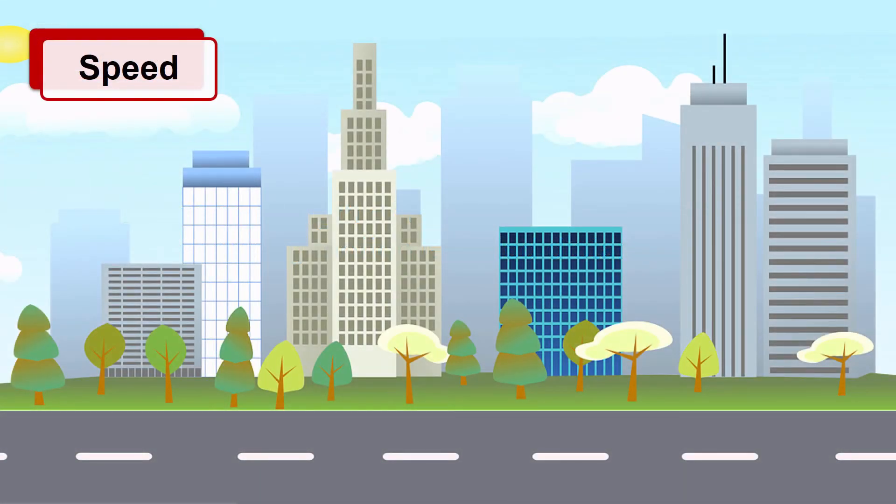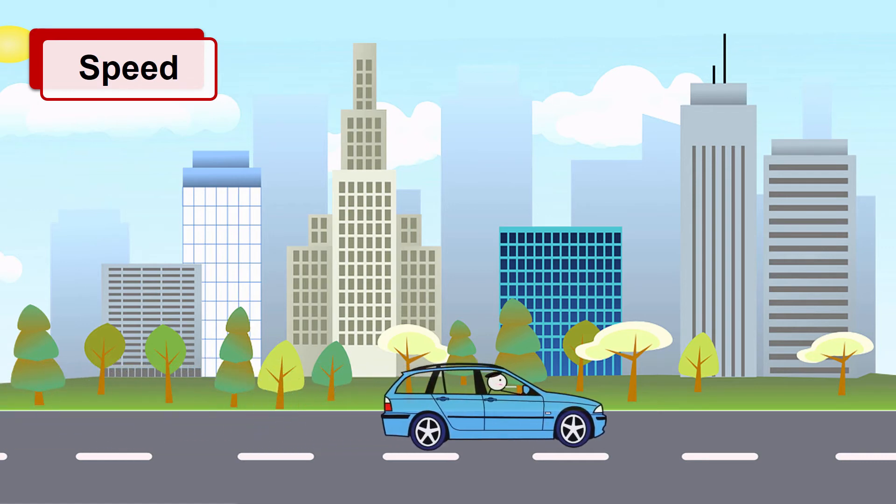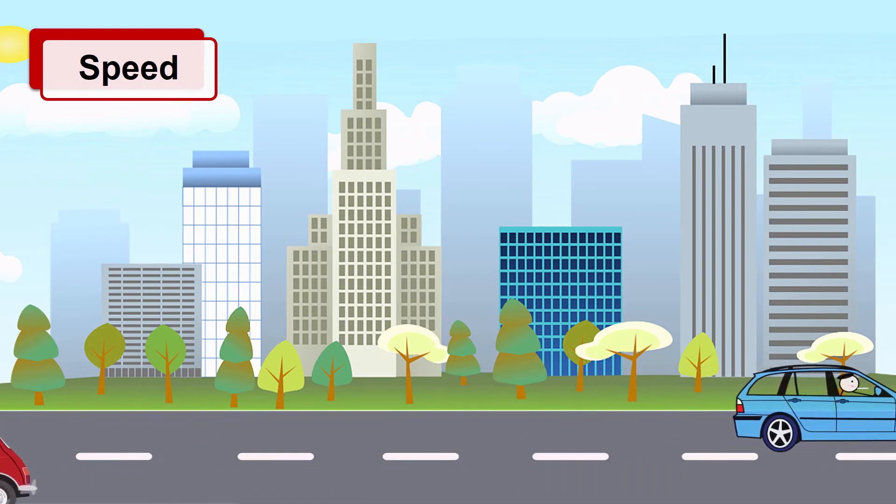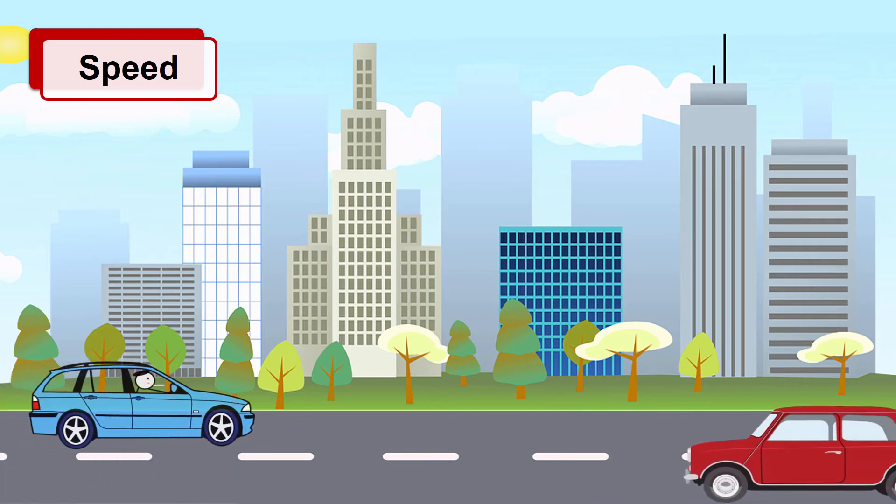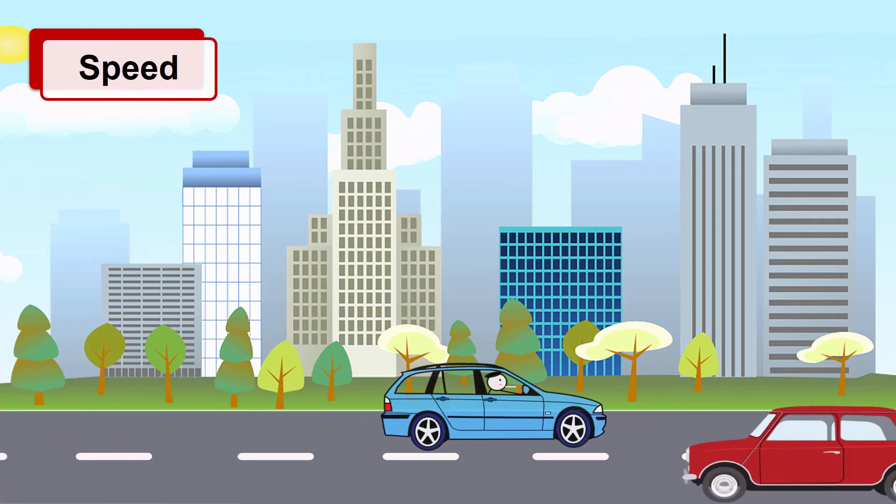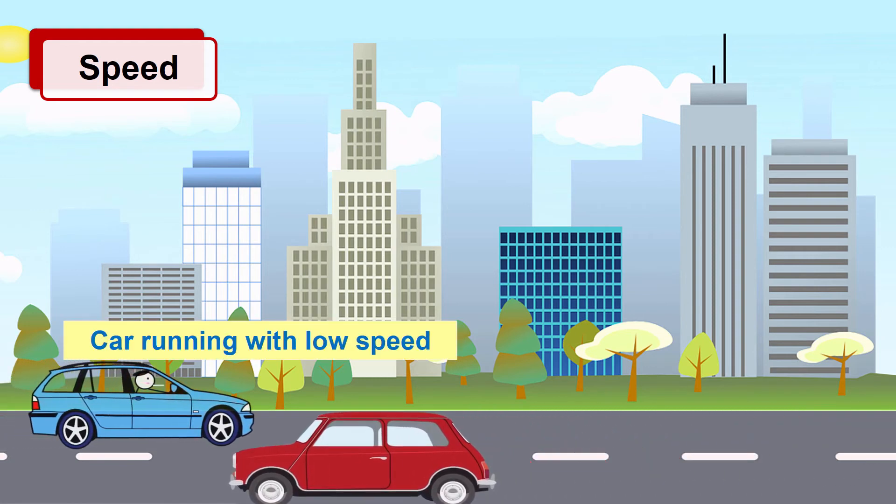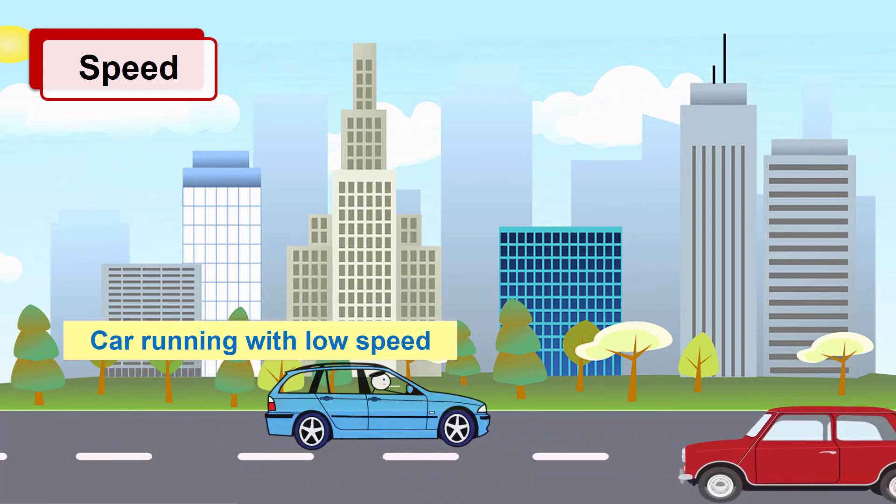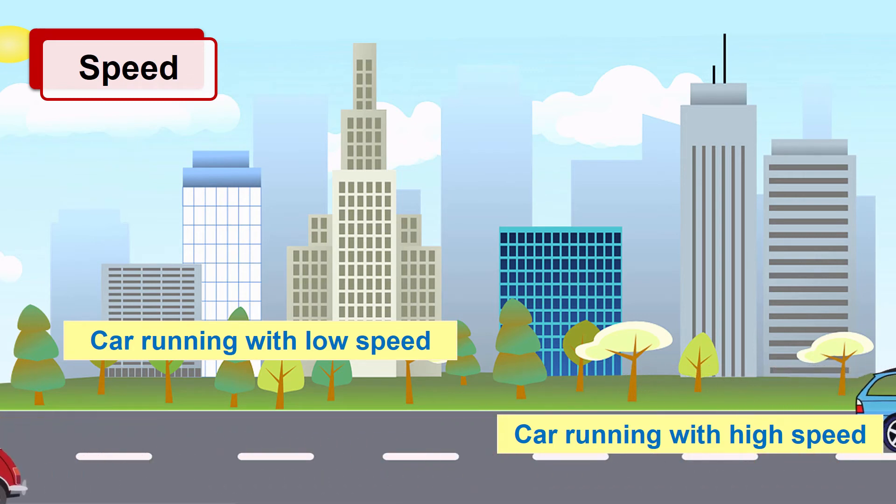Let's see what is speed. If any vehicle is running slow, we say that its speed is low. And if any vehicle is running fast, then we say that its speed is high. Thus, the speed of a body gives us an idea of how slow or fast that body is moving. Here, we can see the blue car is running slow, hence we can say its speed is low. And the red car is running fast, hence we can say its speed is high.